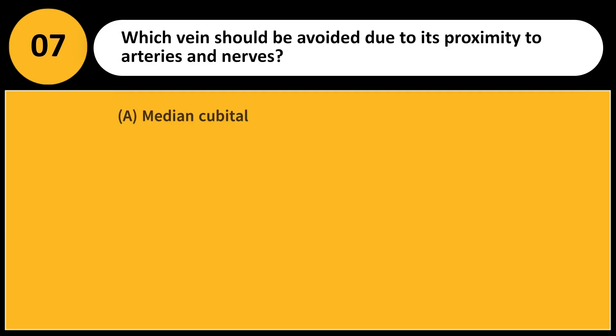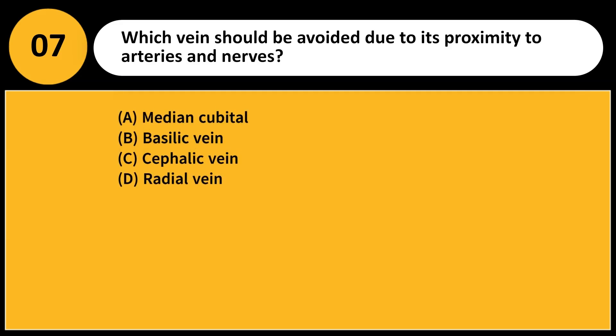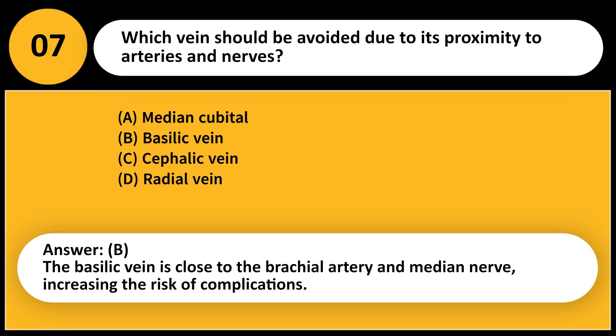Which vein should be avoided due to its proximity to arteries and nerves? A. Median cubital. B. Basilic vein. C. Cephalic vein. D. Radial vein. Answer: B. The basilic vein is close to the brachial artery and median nerve, increasing the risk of complications.